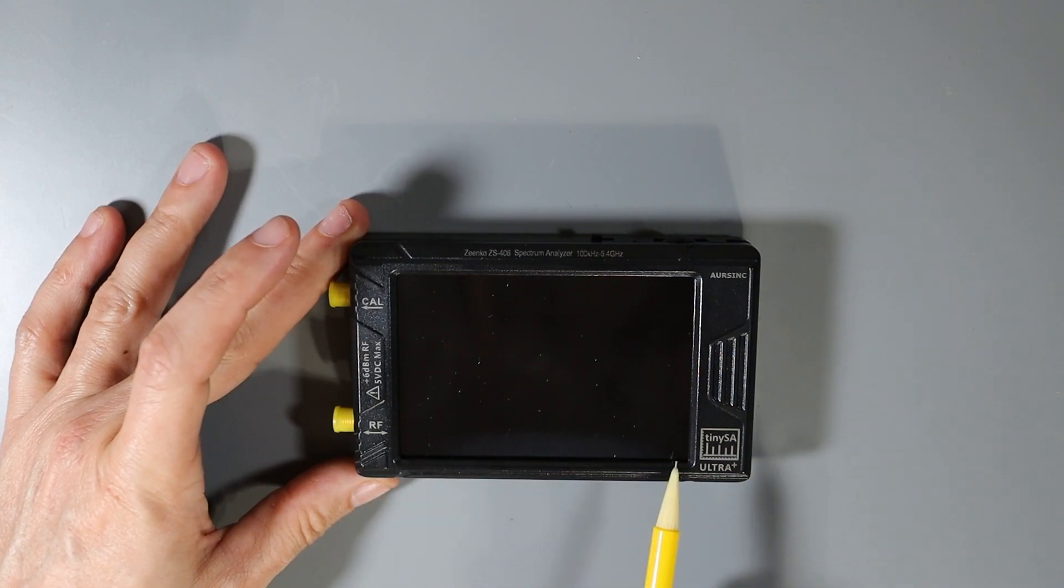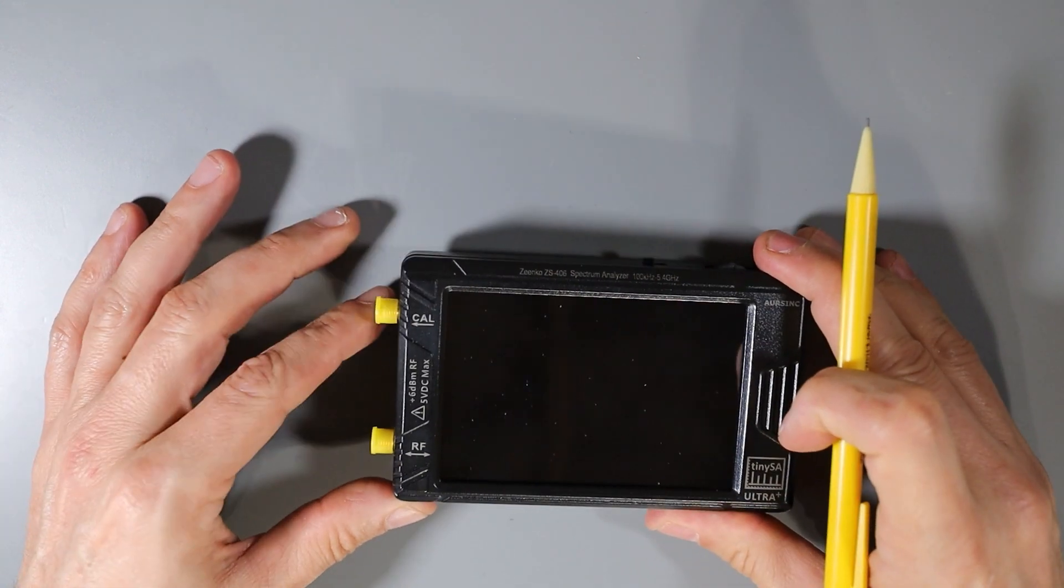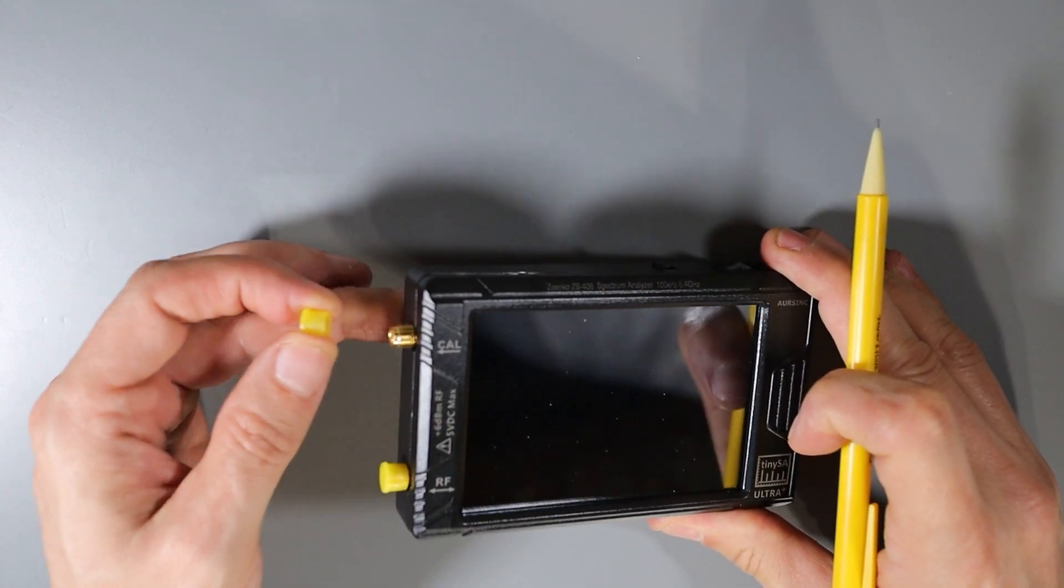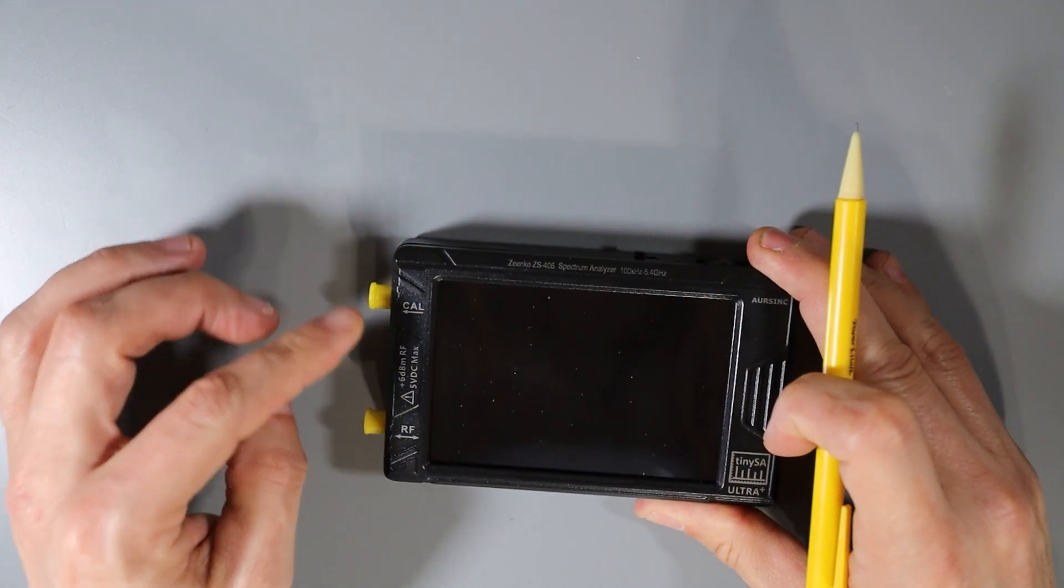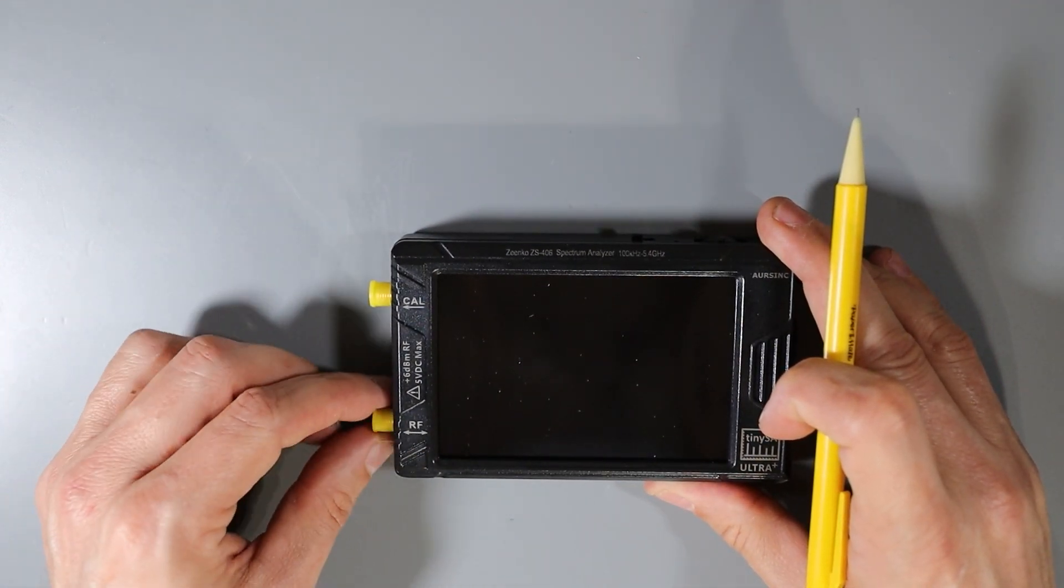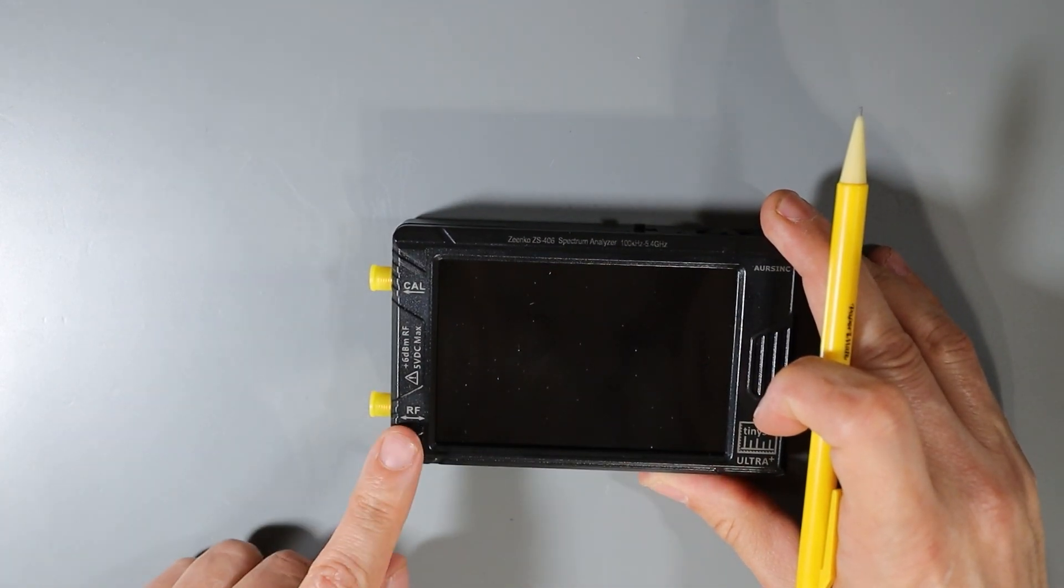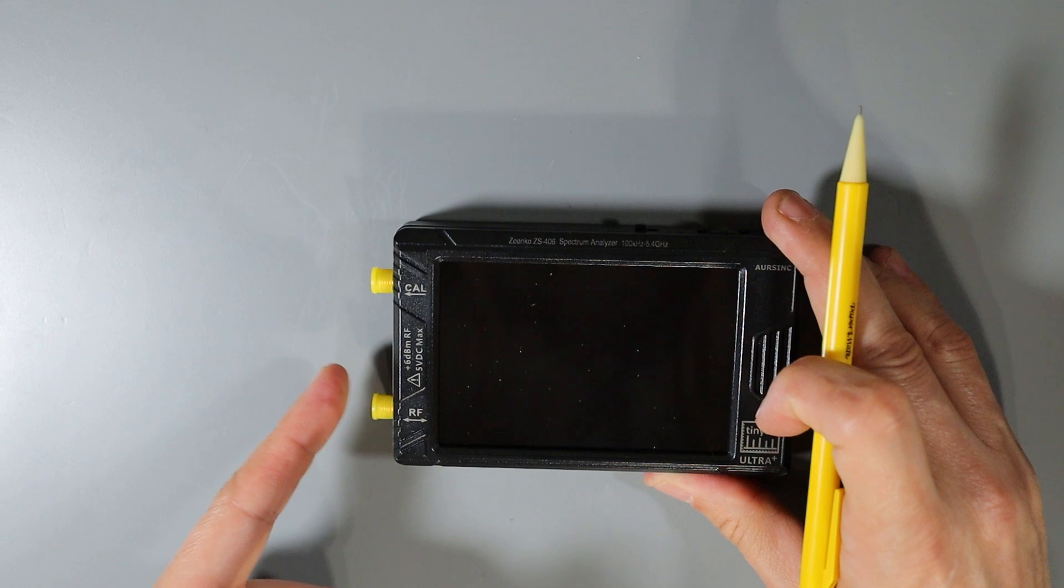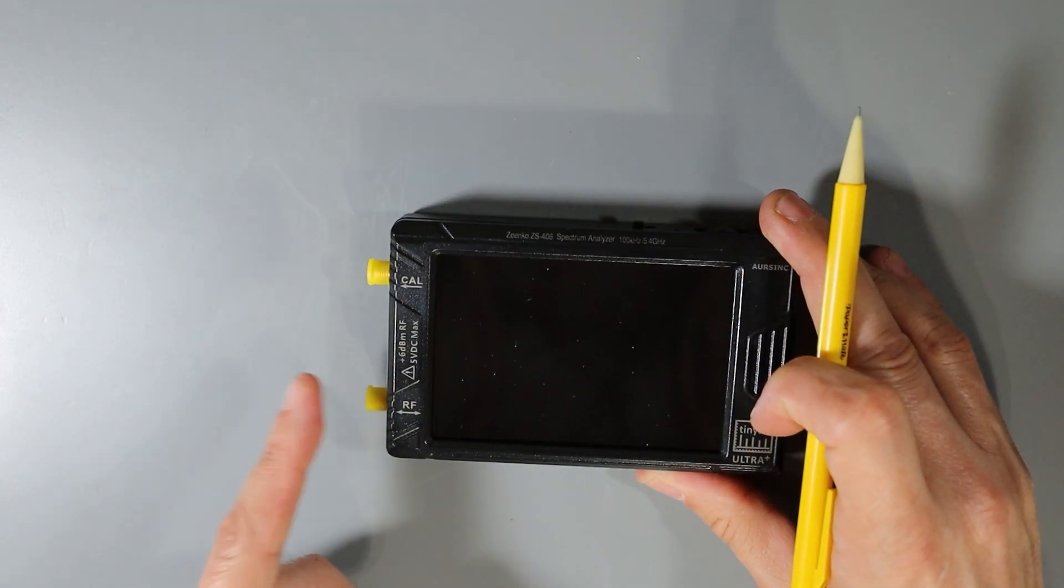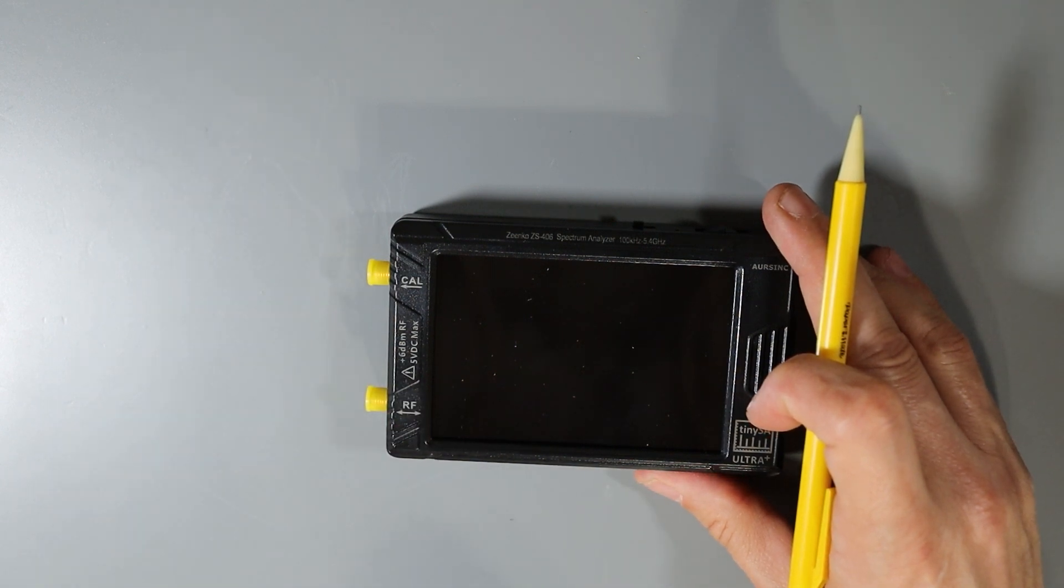The screen for the TinySA Ultra measures about three and a half inches wide by about 2.3 inches tall. Over here on the left side, we've got two SMA female jacks, one is the calibration port and the other is the RF in and out port. It's a good idea to keep these dust caps installed when you're not using the TinySA. That'll help keep dust and debris out of the ports, but it'll also help prevent any static discharge from ruining the sensitive electronics inside this device.